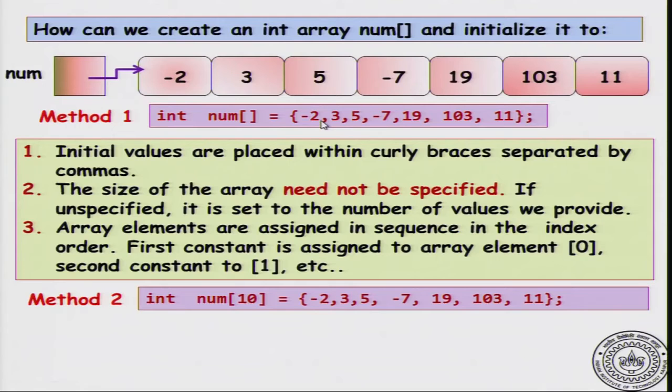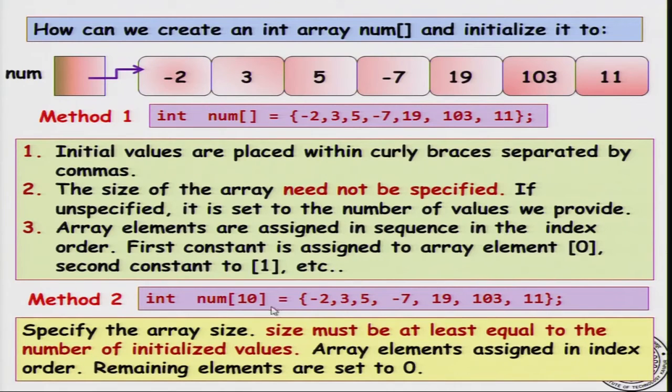There is also another way to do it which is slightly different from the way above. I can declare the size of an array. I declare an array of size 10 and then give these initial values. What will happen in this case is that it will make sure that the size of the array is at least equal to the size of the list that I have given. I have given seven elements and I have declared an array of size 10. 7 is less than 10, so it is fine. I can declare an array of size 10. I should give values at most 10 in number. I can give 10 or below. In this case, I give 7 numbers. What happens is that the array is initialized in the order of elements given. Num[0] will be -2, num[1] will be 3 and so on until num[6] will be 11. 7 elements are filled. The remaining 7 elements are unspecified. They will be initialized to 0.